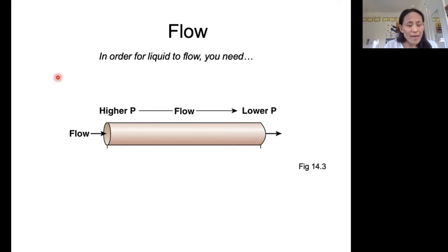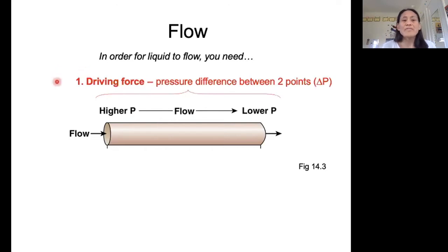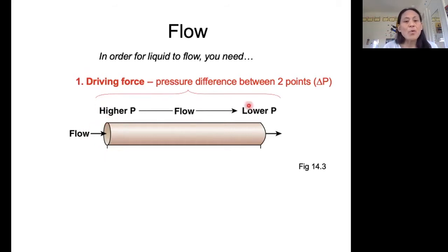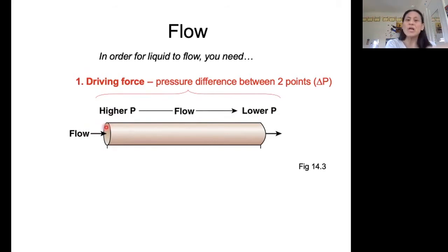In order to get liquid, such as blood, to flow, you're going to need two main things. The first thing you're going to need is a driving force, and that driving force is going to be a pressure difference between two points. You need a higher pressure at one end of your tube and a lower pressure at the other end, and you're going to have flow from the area of higher pressure to the area of lower pressure.